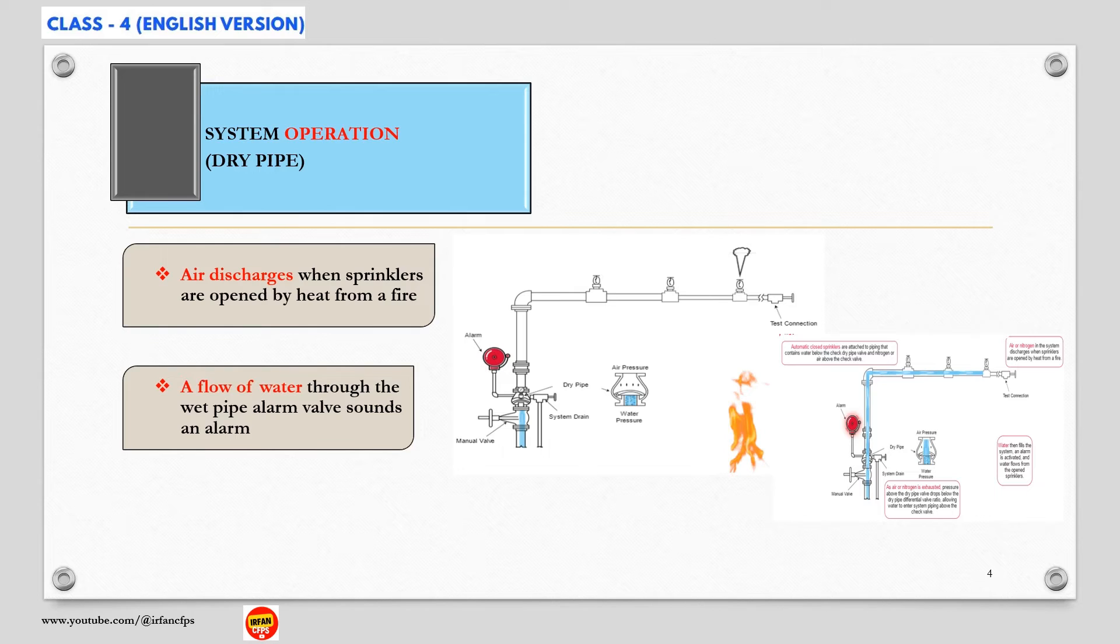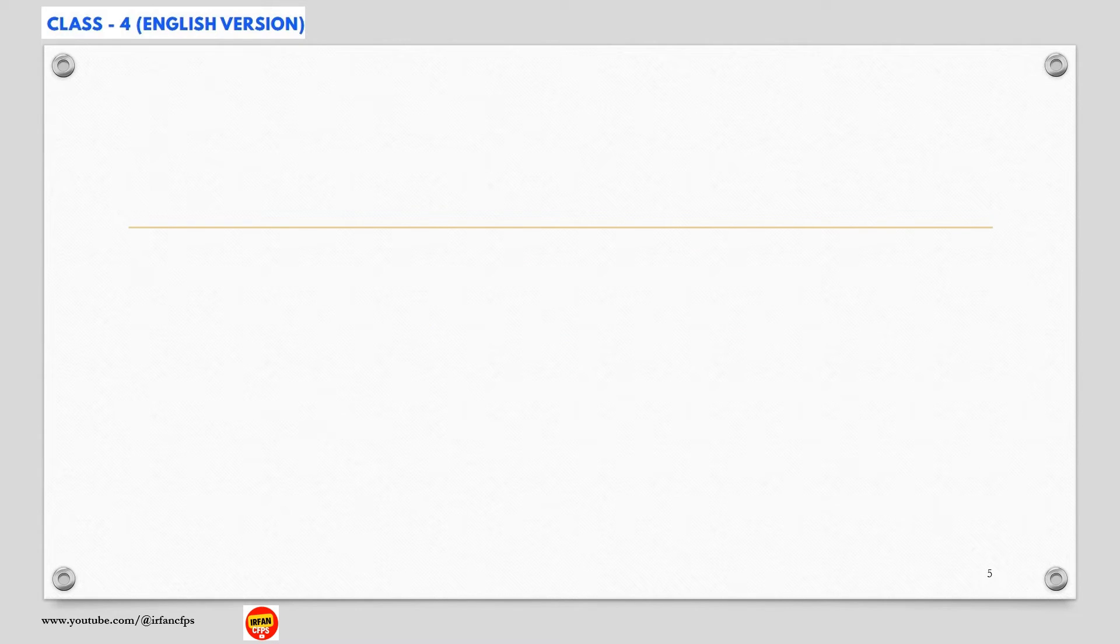Since there is a delay between sprinkler operation and water flow, the size of dry pipe systems is limited. The size limitation is intended to minimize the amount of time water delivery is delayed.